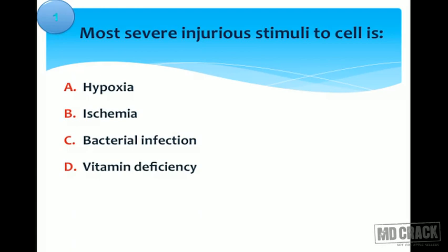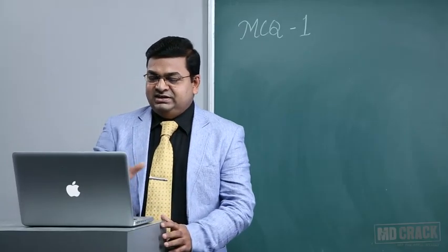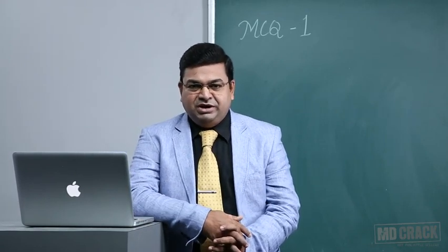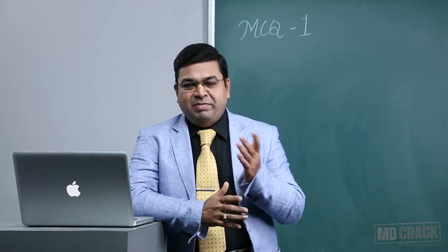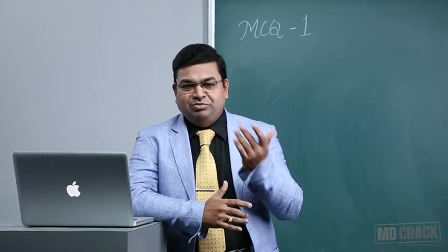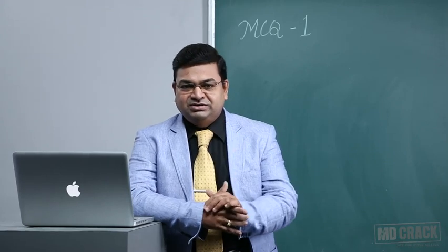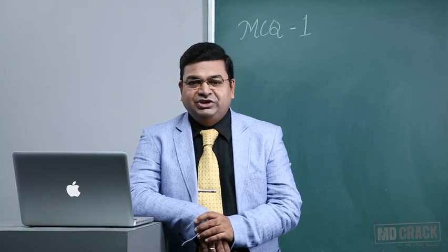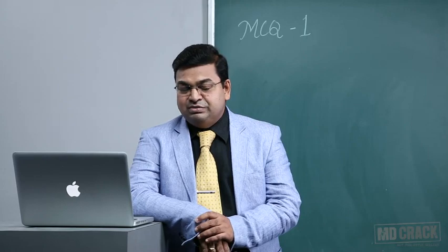The options are: hypoxia, ischemia, bacterial infection, and vitamin deficiencies. Going back to the cell injury chapter — using the mnemonic I discussed — bacterial infections can cause immunological reactions, autoimmune disorders, and even hypoxia-ischemia. All of these are injurious stimuli to the cell, but which is the most severe?